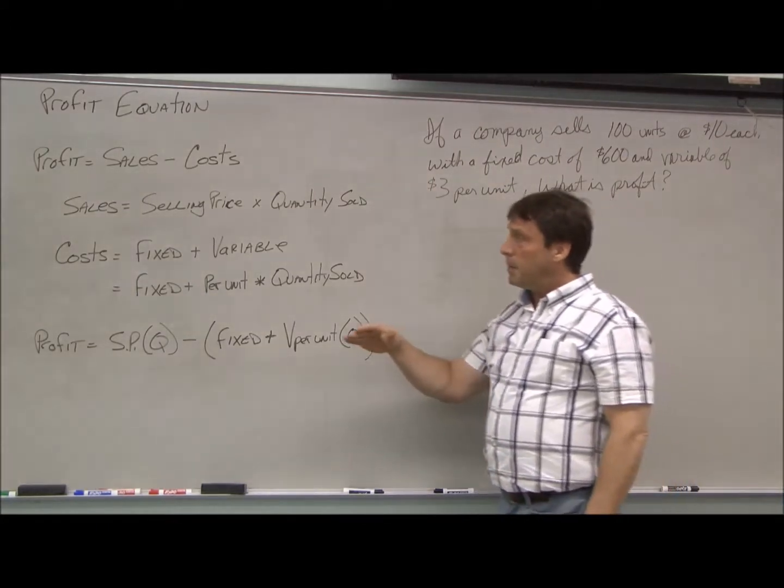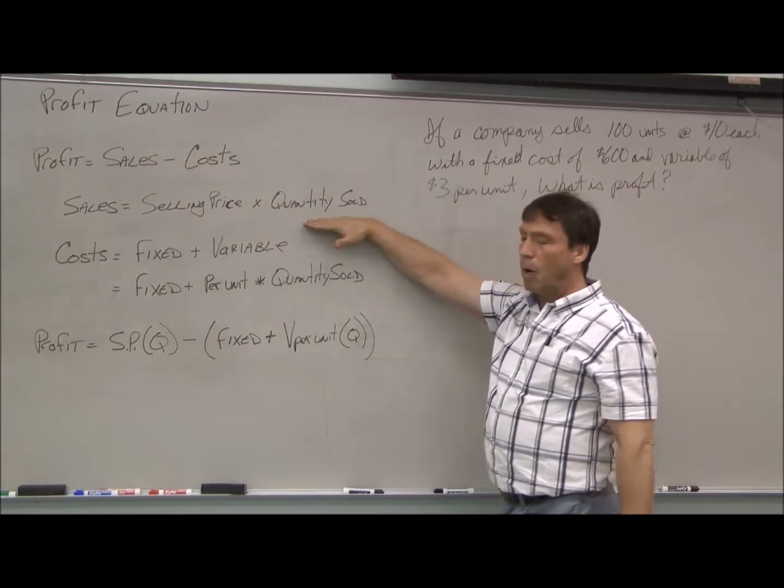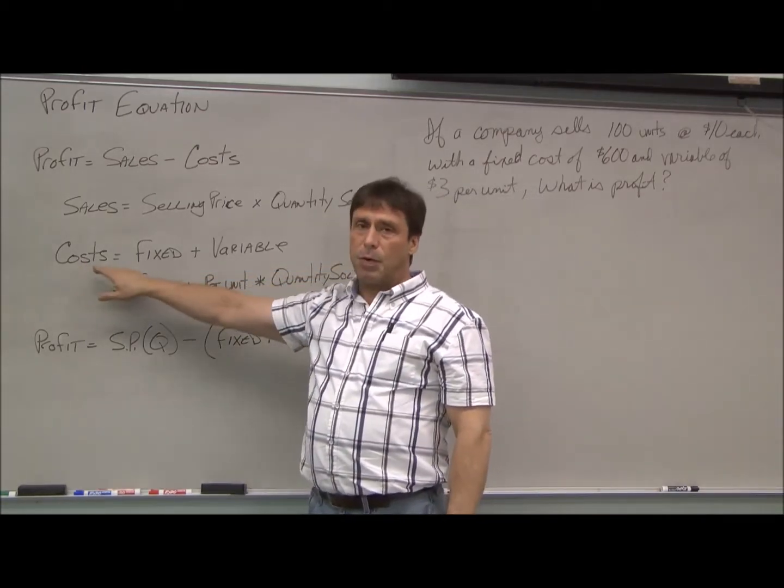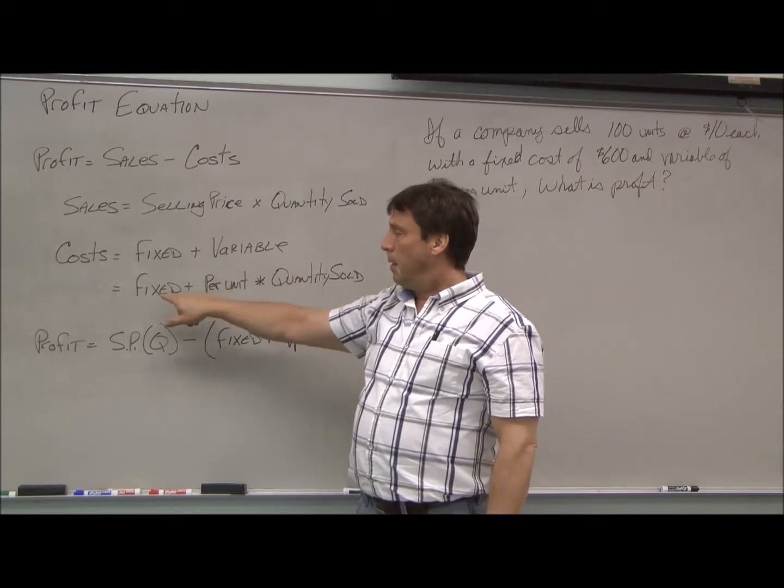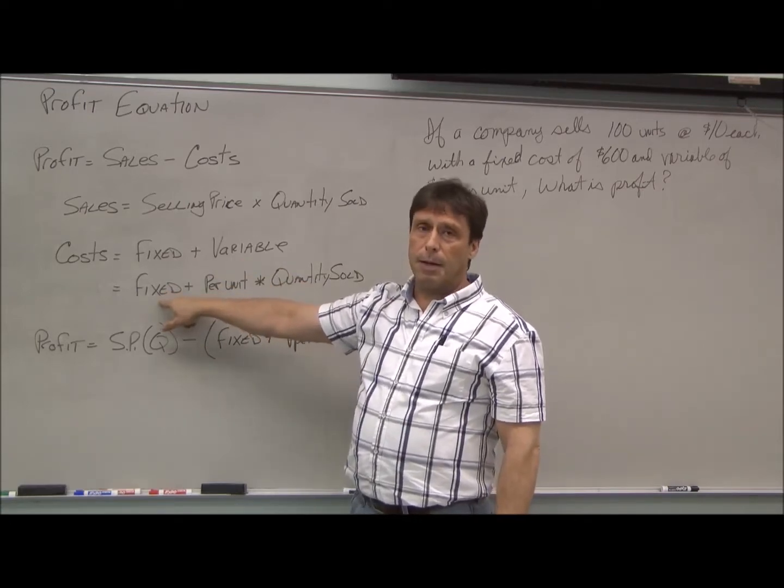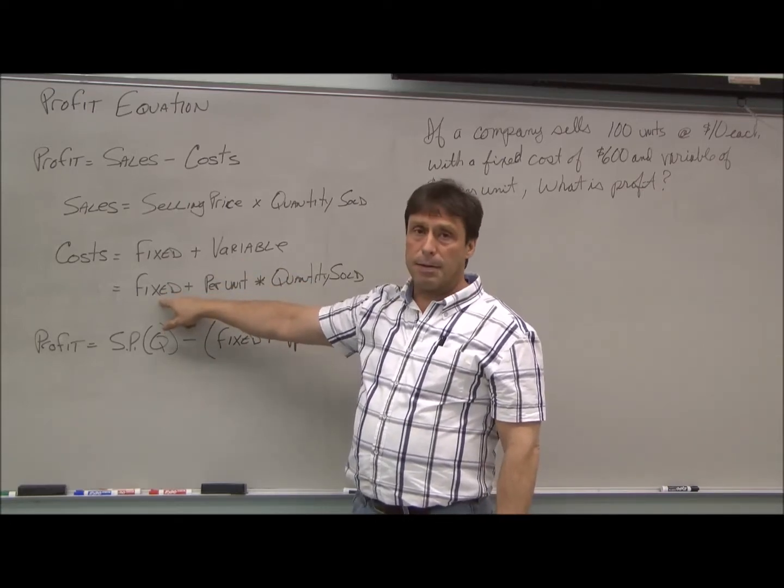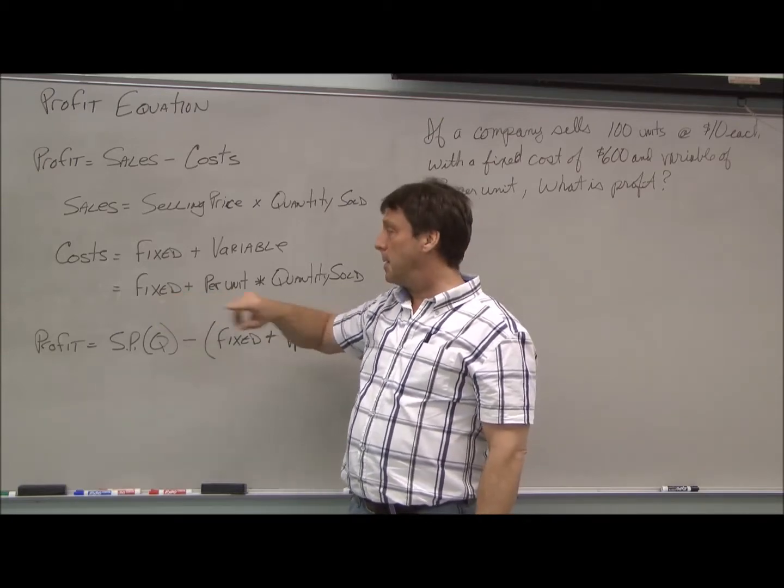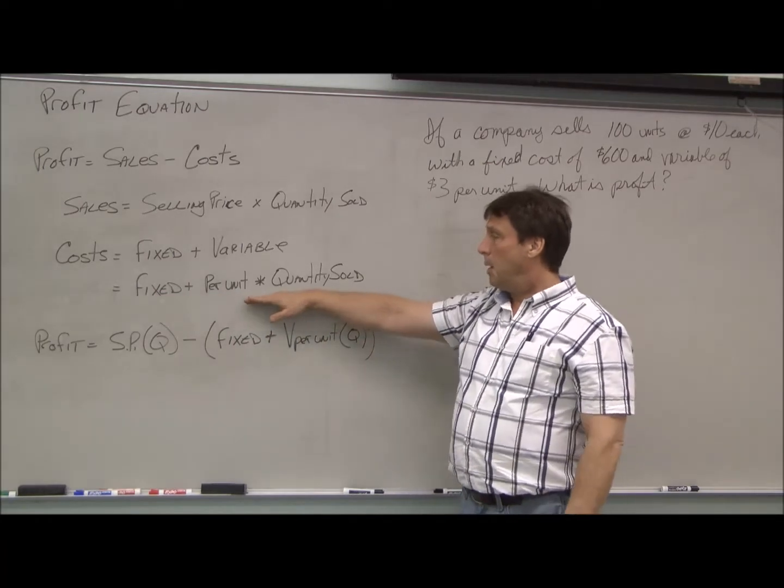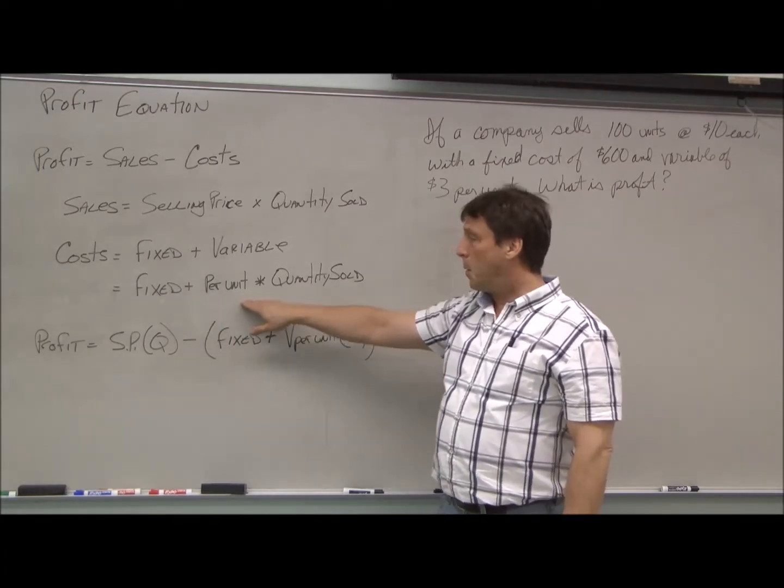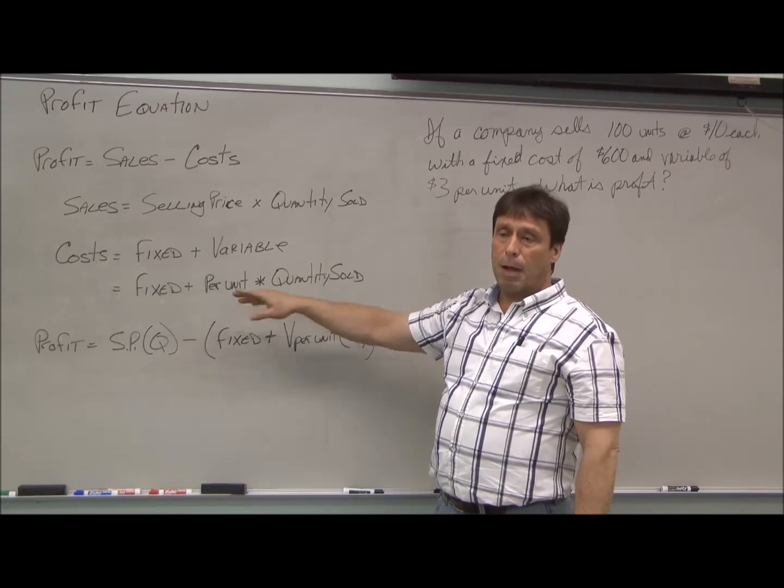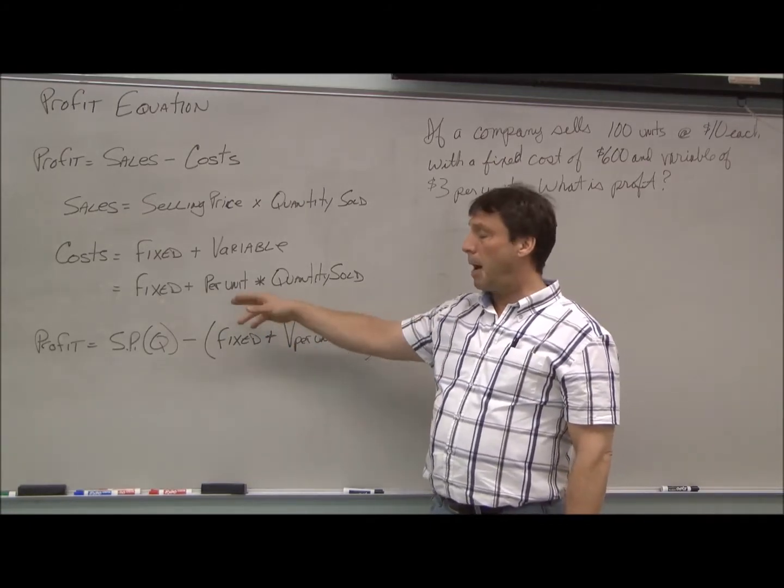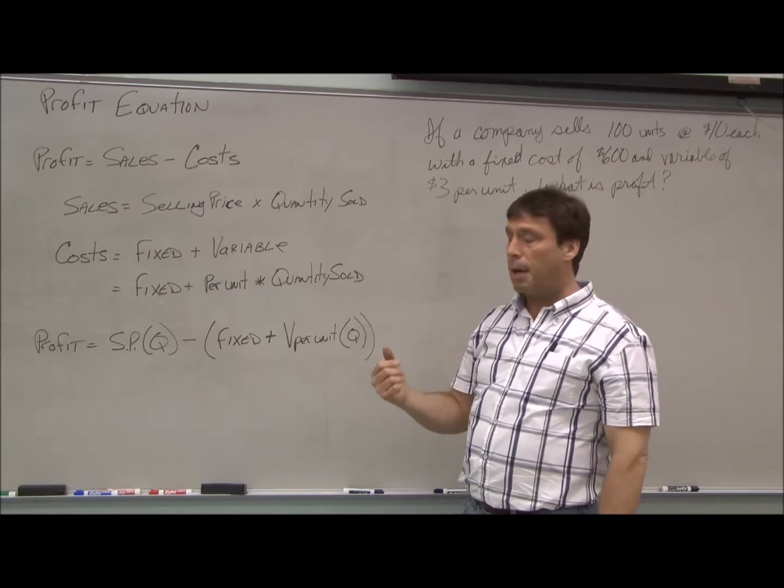Sales is the selling price times the quantity sold. Costs have two components: fixed and variable. Fixed costs don't change, such as rent or the CEO's salary. The per unit variable cost is how much labor it takes to build one unit of direct labor and how much material you put into that one unit.